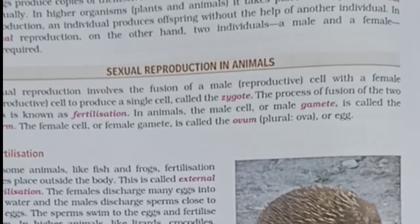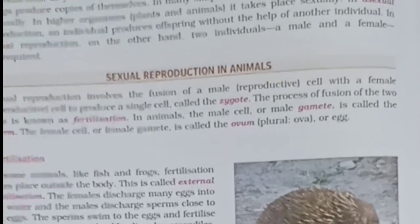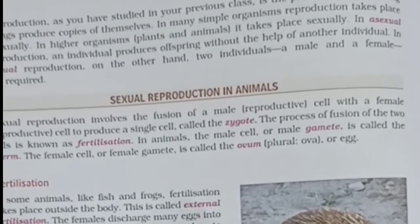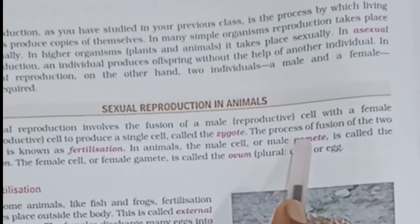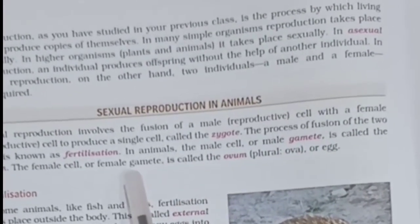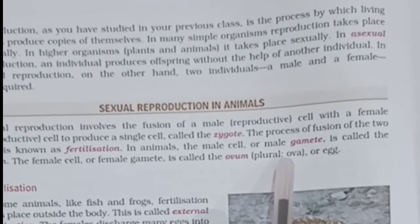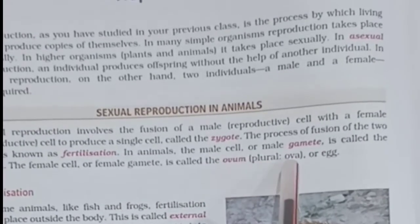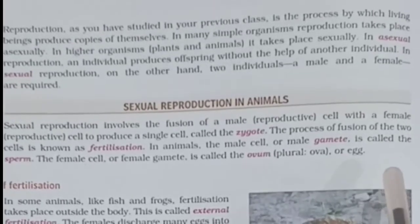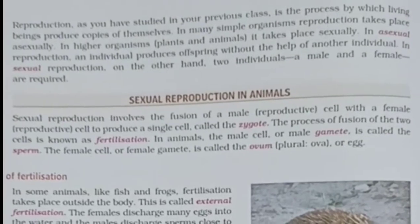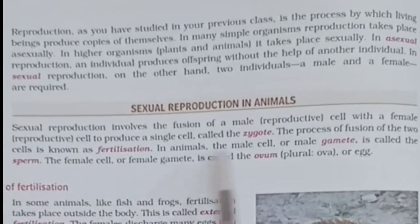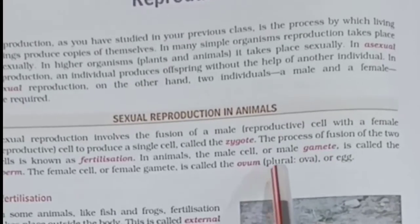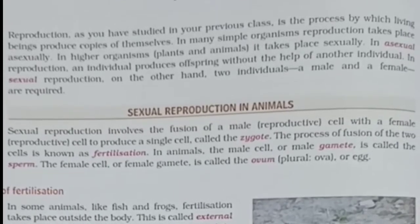In animals, we have two types: male and female. The male sex cell is called the male gamete, and the female sex cell is called the female gamete or the ovum, plural ova or egg. When the process of reproduction occurs, the male gamete — the sperm — and the female gamete — the ovum — fuse to form a zygote. This process of fusion of the two sex cells or gametes is called fertilization.